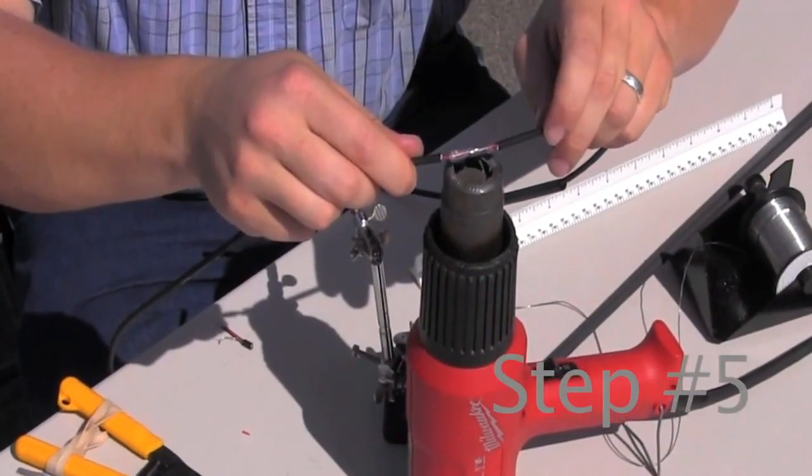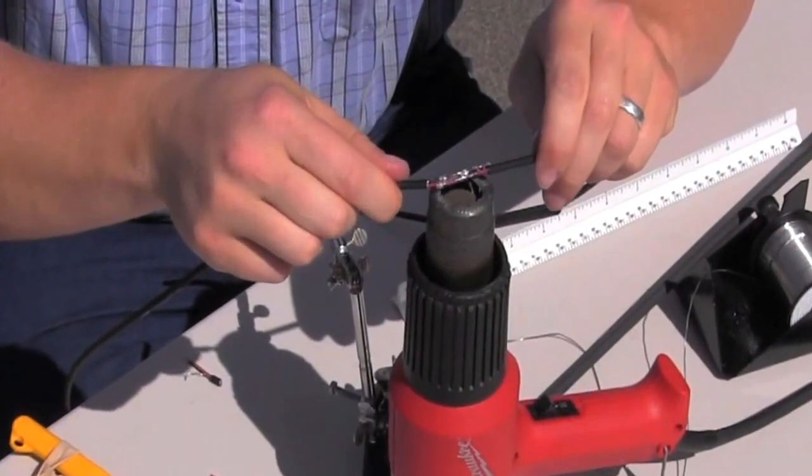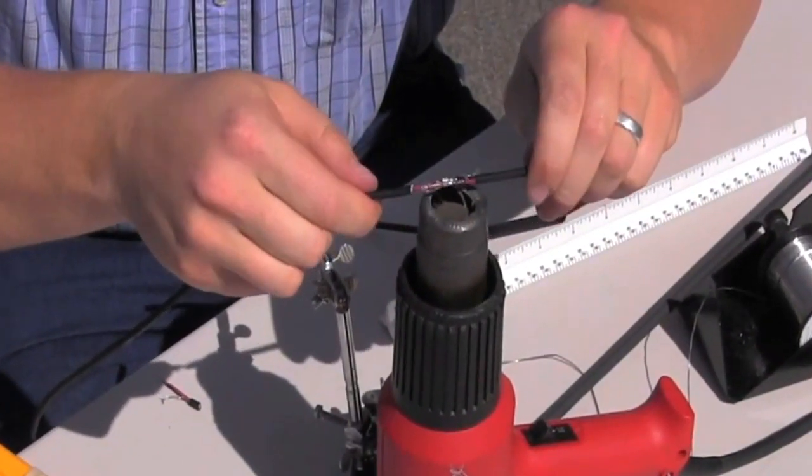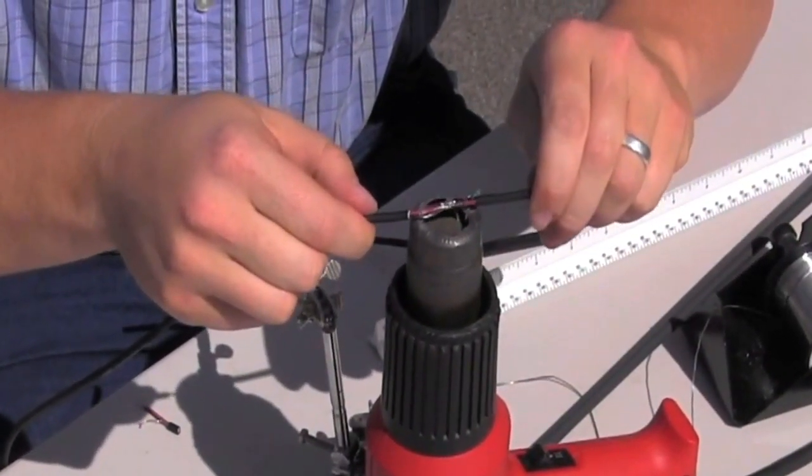Step 5: heat the solder sleeves using a heat gun until the solder flows. Remove the heat and be careful not to pull on the cable or individual wires until the solder is set.